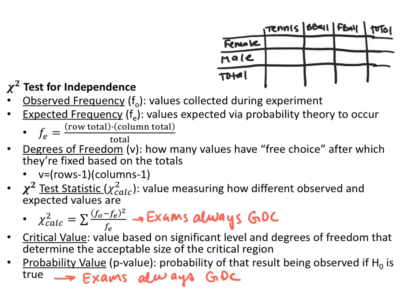For the next couple of slides, I'll cover vocabulary we need before doing an example. We'll have data tables comparing one qualitative variable to another — for example, gender versus favorite sport. The observed frequency, F sub-O, is the values you collected during the experiment, such as how many females chose tennis or how many males chose basketball. The expected frequency, F sub-E, is the values you would expect via probability theory — basically, given the total data collected, what would you expect each group to be.